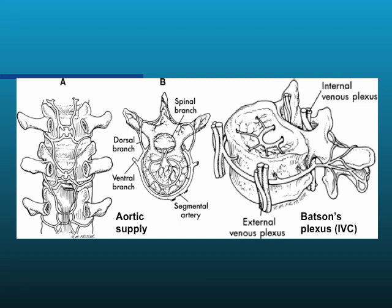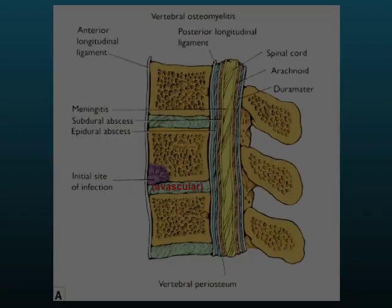This is a schematic of the vertebral blood supply. There's arterial supply from the aorta with dorsal and ventral branches that penetrate into the disc, and also the external venous supply — Batson's plexus. Although the blood is supposed to be moving away from the bone, it's all very sluggish and travels up and down in the venous plexus, creating turbulence, which is a good environment for bacteria to establish infection.